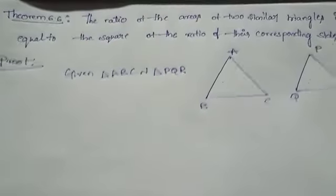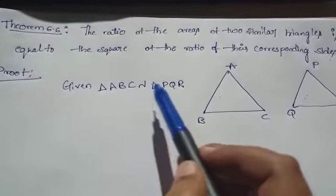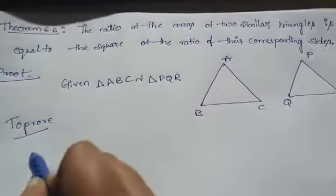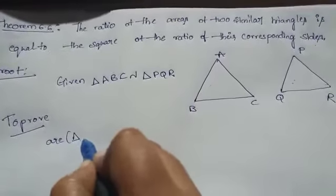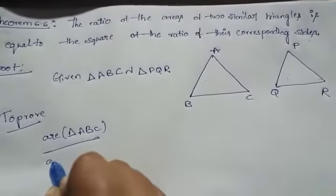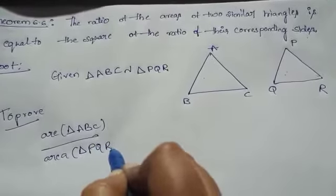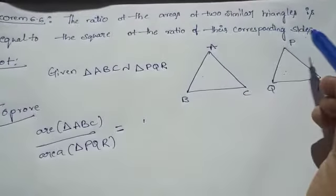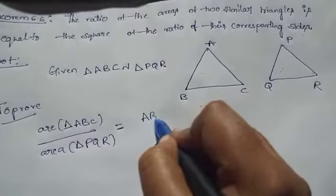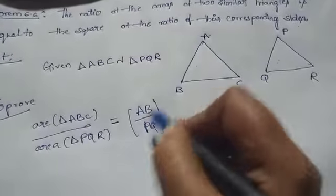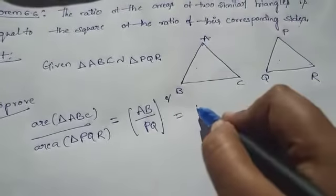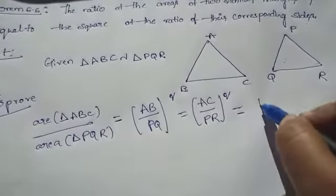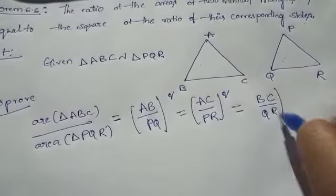Given: triangle ABC is similar to triangle PQR. Here we need to prove the area of these two triangles: area of triangle ABC by area of triangle PQR is equal to the square of the ratio of their corresponding sides — AB by PQ squared, which equals AC by PR squared, equals BC by QR squared.